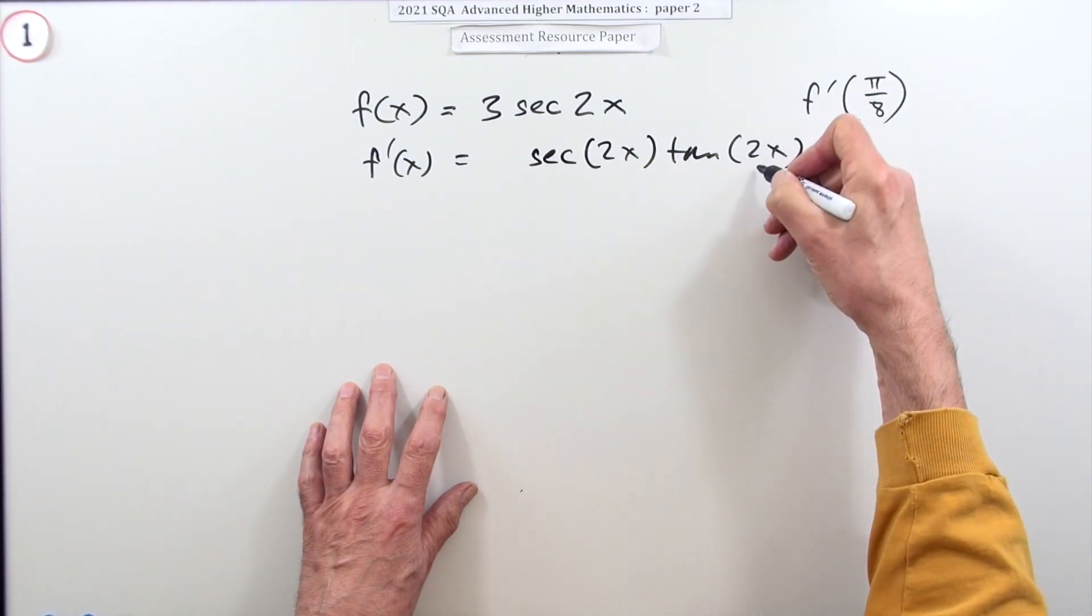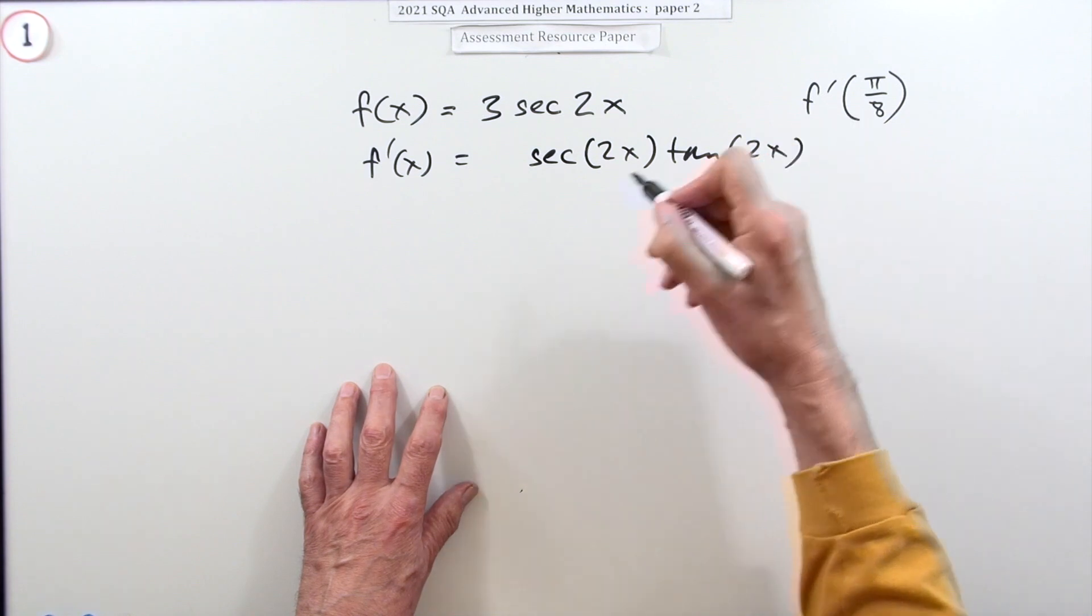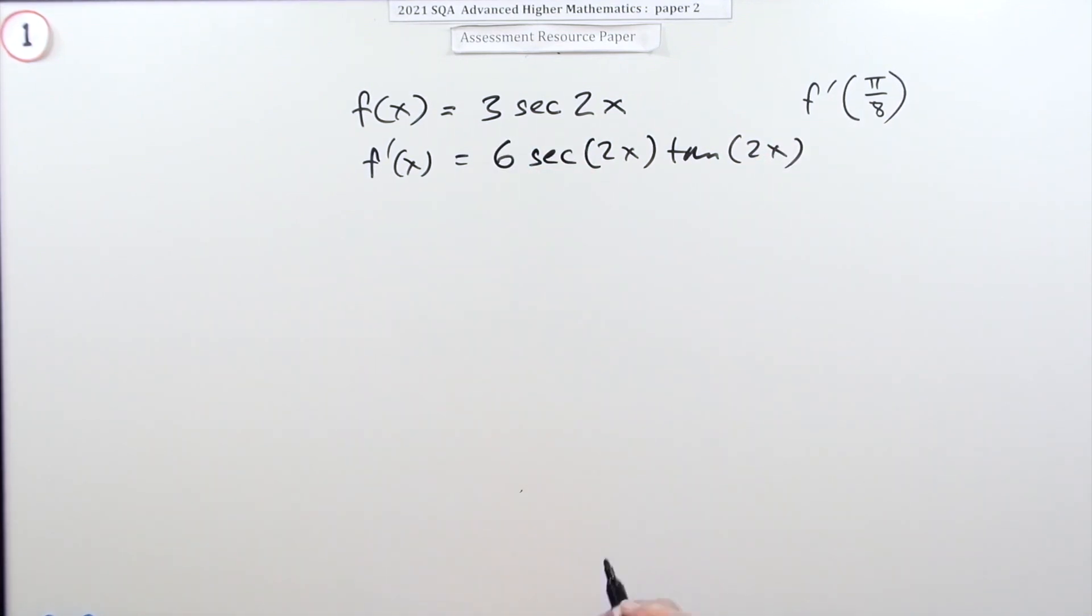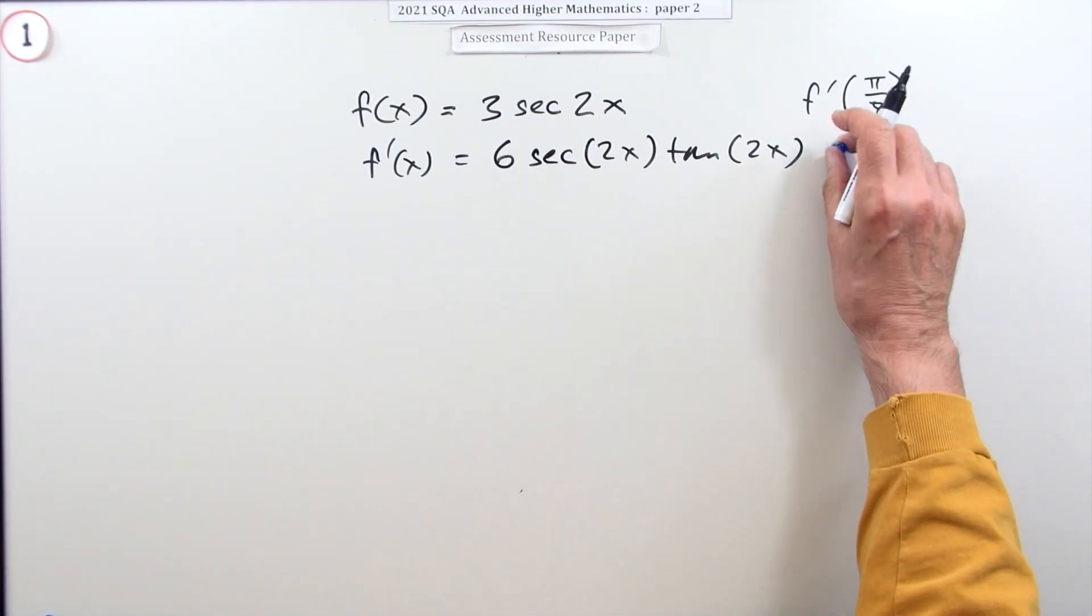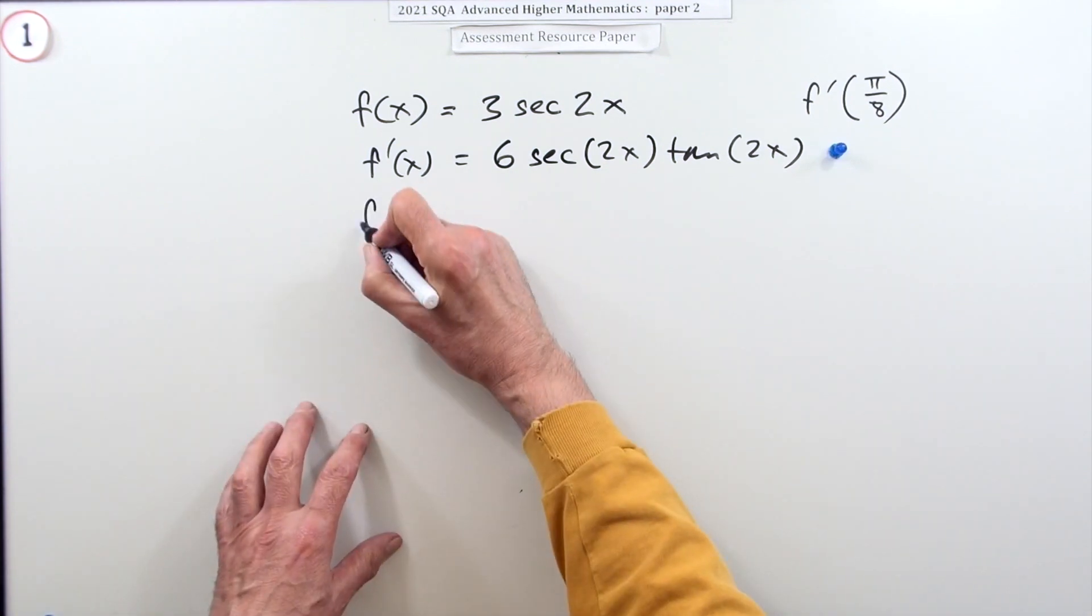Multiplied by the derivative of the inside which is a two, so that's going to give us six. Having that gets a mark, now you just have to evaluate it.